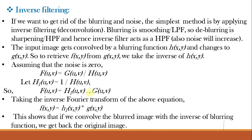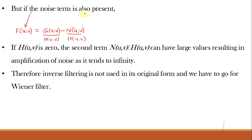Taking the inverse Fourier transform converts the frequency-domain multiplication to convolution: f(x,y) = h_inverse(x,y) * g(x,y). This shows that convolving the blurred image with the inverse of the blurring function recovers the original image. However, if noise is present and H(u,v) equals zero, then N(u,v)/H(u,v) can become very large, resulting in amplification of noise. Therefore, inverse filtering is not used in its original form and we must use the Wiener filter, which also handles high frequency noise.